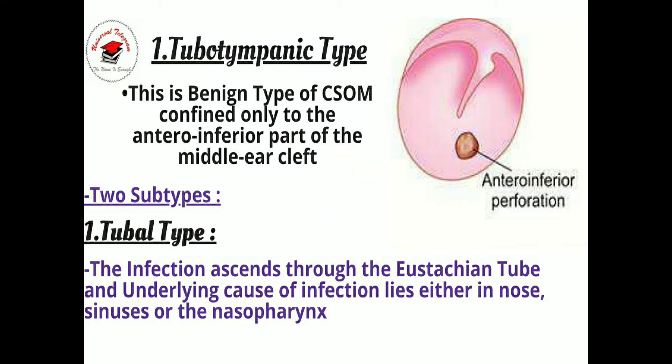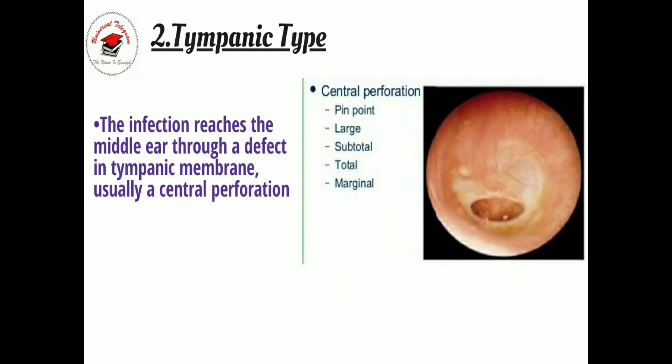Moving forward to its subtypes: the first subtype is the tubal type, where infection ascends through the Eustachian tube and the underlying cause of infection lies either in the nose, sinuses, or the nasopharynx. The second subtype is the tympanic type, where infection reaches the middle ear through a defect in the tympanic membrane — usually a central perforation, which can be pinpoint, large, subtotal, total, or marginal.